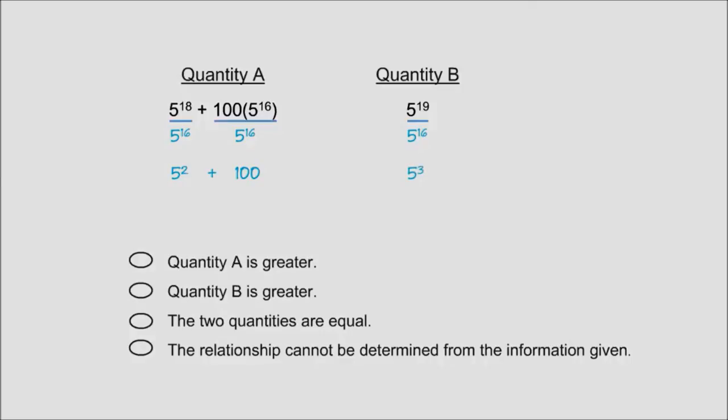5 squared plus 100 is 25 plus 100, also known as 125. And 5 cubed is a number you should know off the top of your head for the GRE. It's good to know your cubes up to 6 or 7.